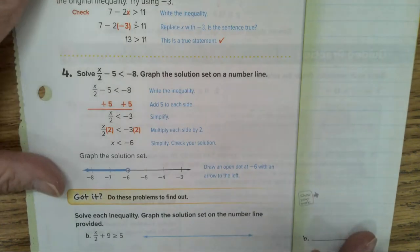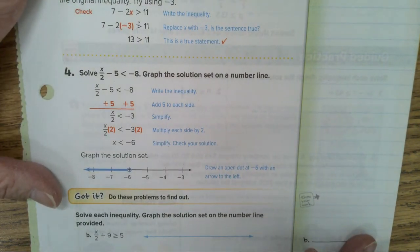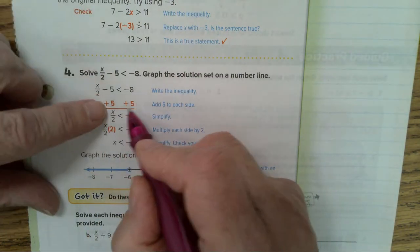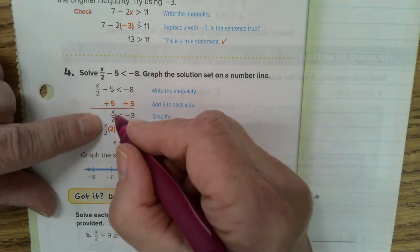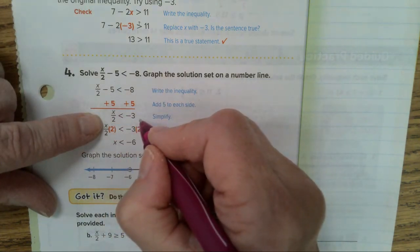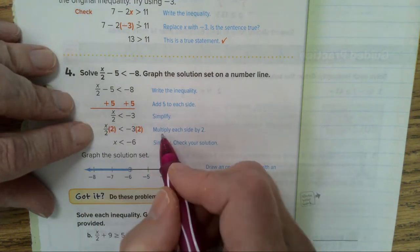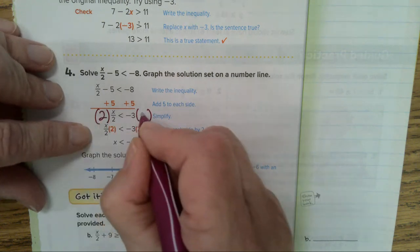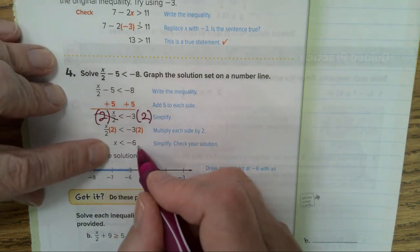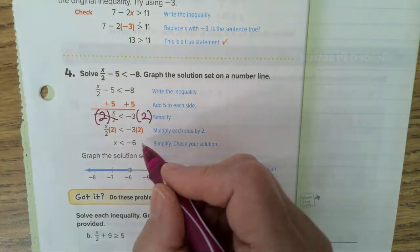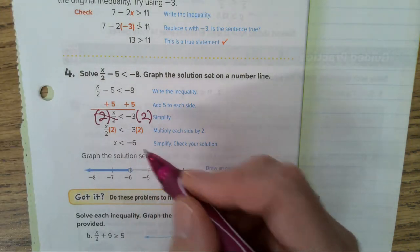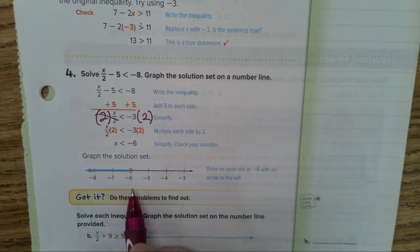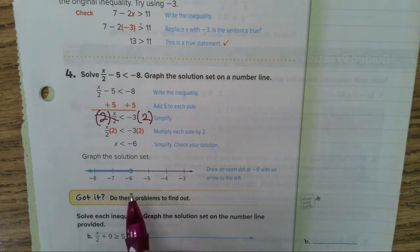Number four, x divided by two minus five is less than negative eight. Well first you get rid of your subtracting five, so you add five. Now you have x divided by two is less than negative three. Multiply both sides by two. You get x is less than negative six. Remember we didn't flip it here because we multiplied both sides by a positive two. Open circle on the negative six going to the left.